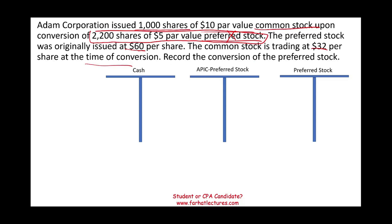The first thing you want to be aware of is when you convert preferred stock into common stock, there is no gain and no loss. The price of the common stock is not relevant because I am not going to record a gain or a loss on the conversion. When you exchange one class of equity into another class of equity, there is no justification from a theoretical perspective to record a gain or a loss. Therefore, we would use the book value when we conduct this transaction.